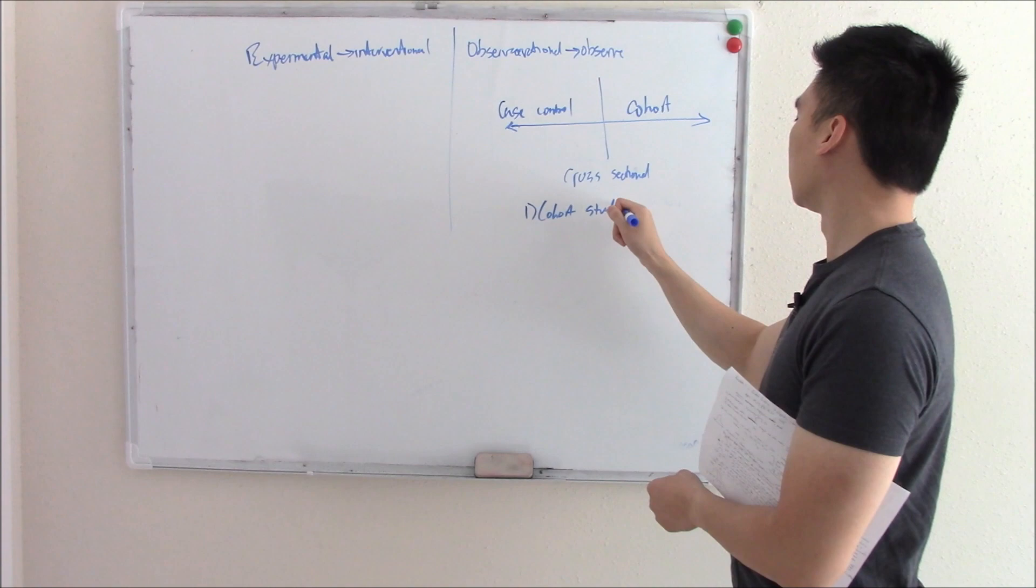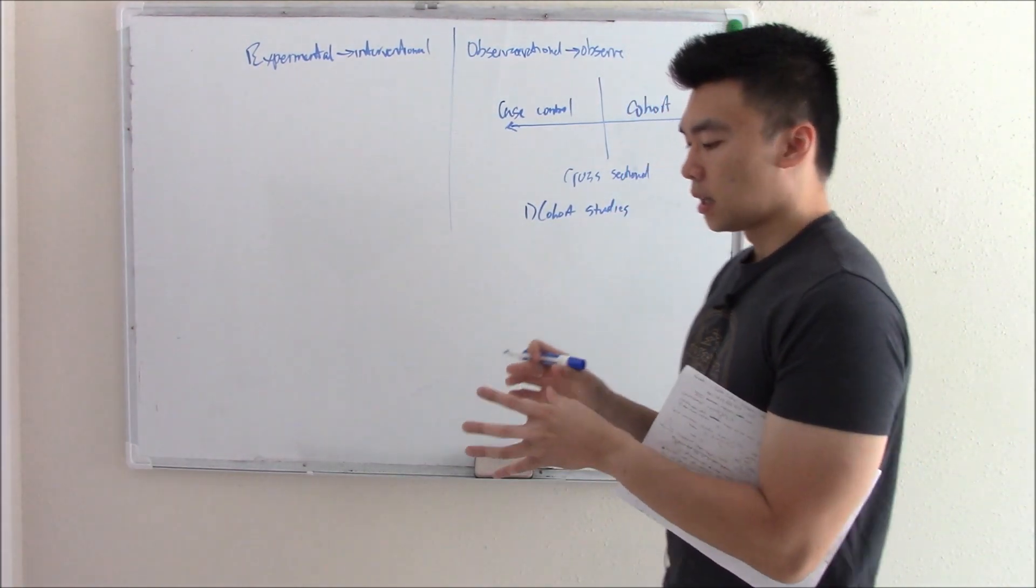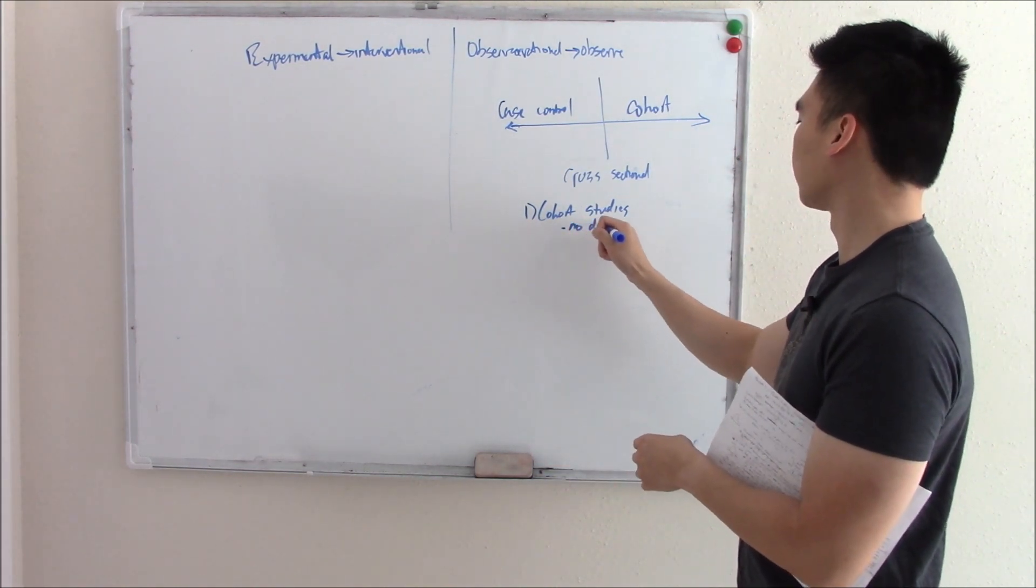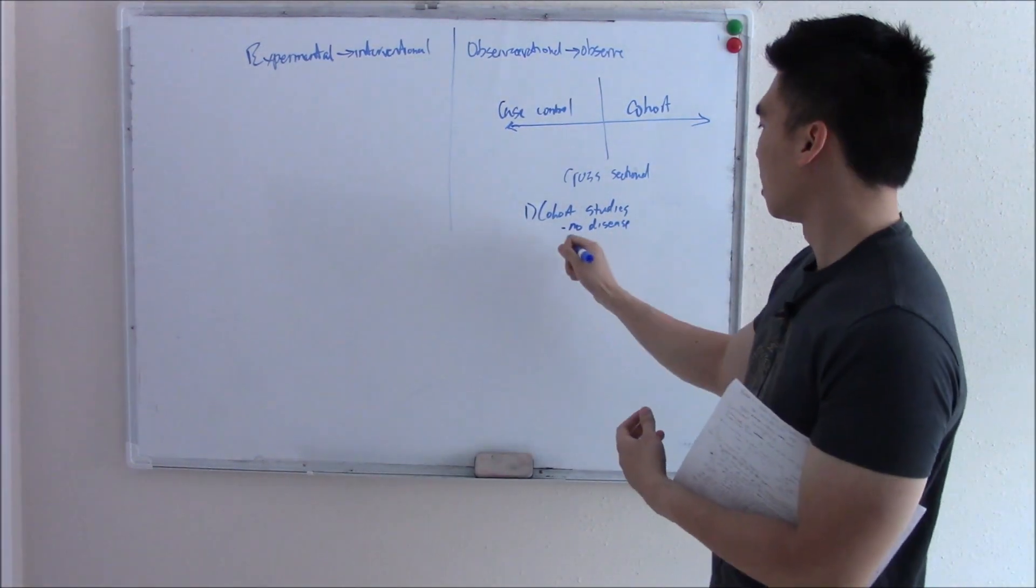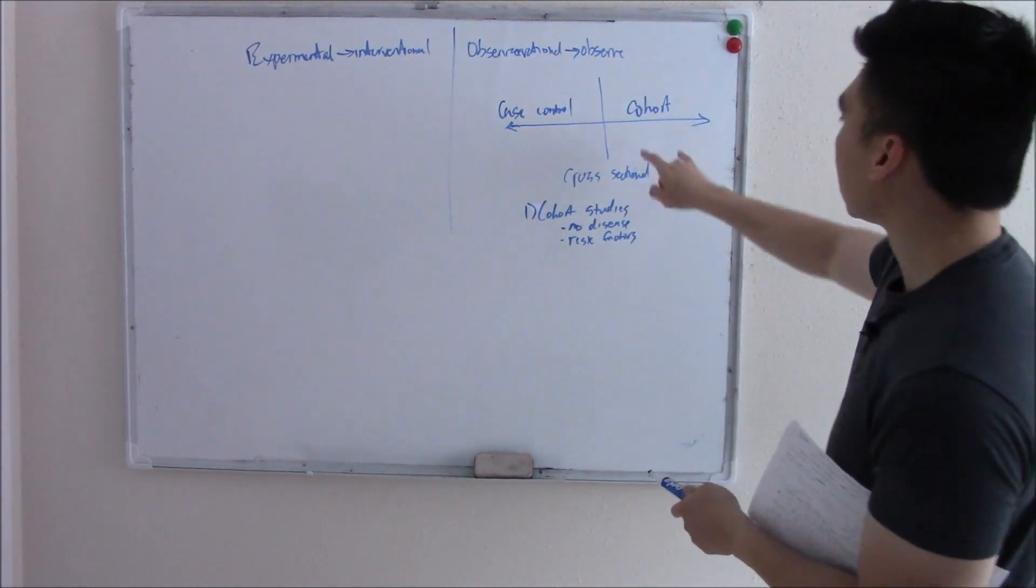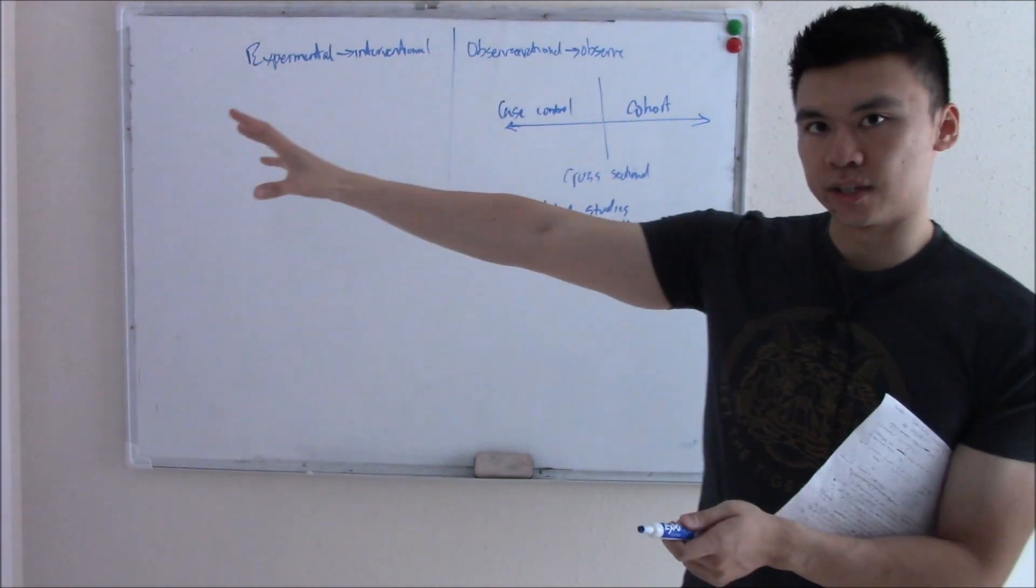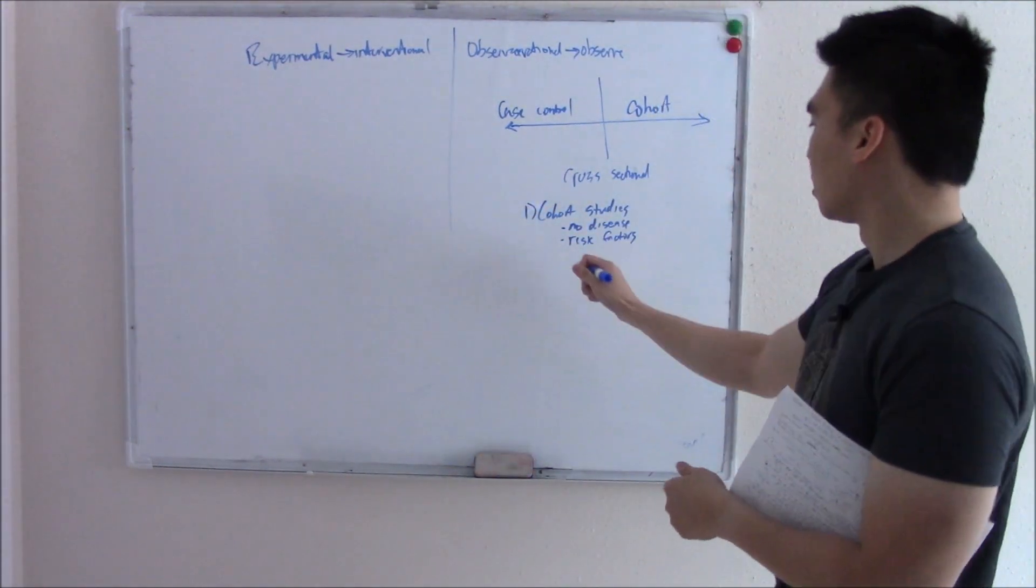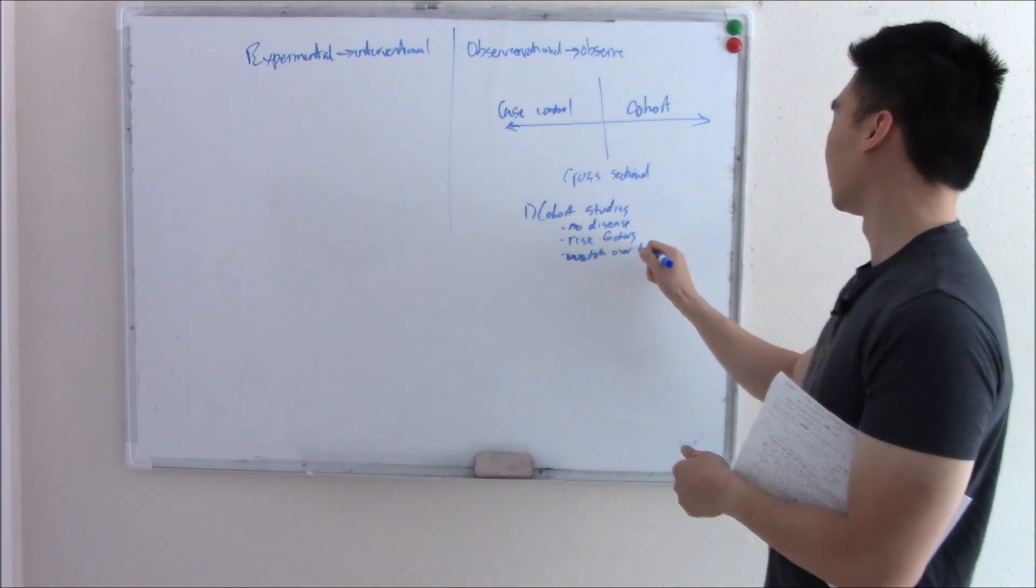Cohort studies are when you take a group of people, a cohort, that don't have the disease. However, they do have risk factors for a disease. And the reason it's on the line that's pointing forward is because you kind of watch them through the years and see if these risk factors make them develop that disease. So watch over time.